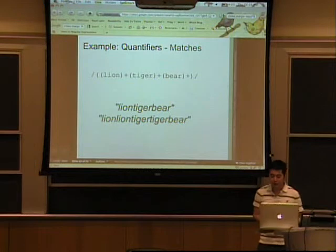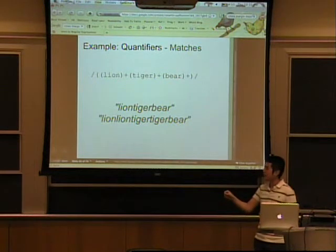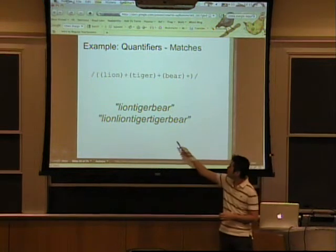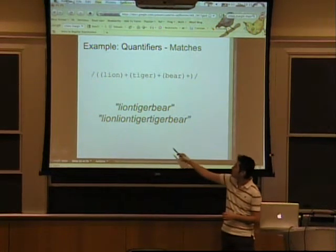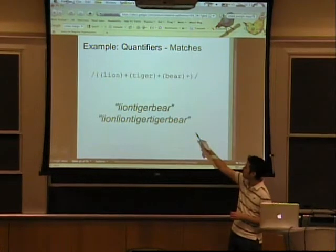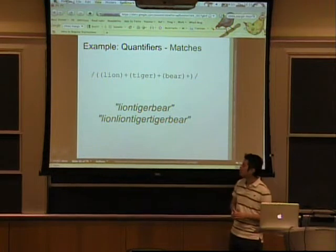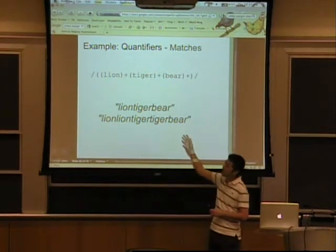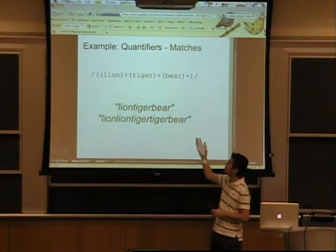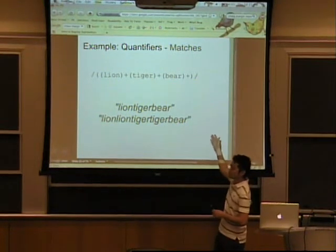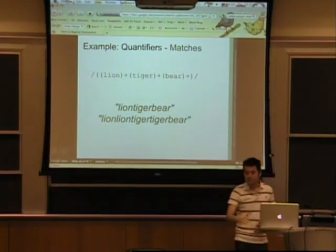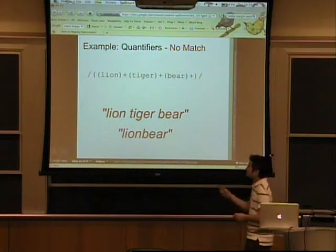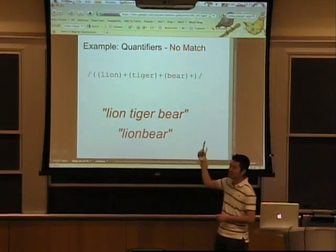So this regular expression matches lion, tiger, bear — and lions, tigers, and bears. We have lion, tiger, bear and then lion lion, tiger tiger, and bear bear, because we have a plus after each group. We have to have lion one or many times, tiger one or many times, bear one or many times. But it doesn't match 'lion, tiger, bear, and bear' with spaces, because I didn't put a space in there. And it doesn't match 'lion, bear' because we require one or many of each.